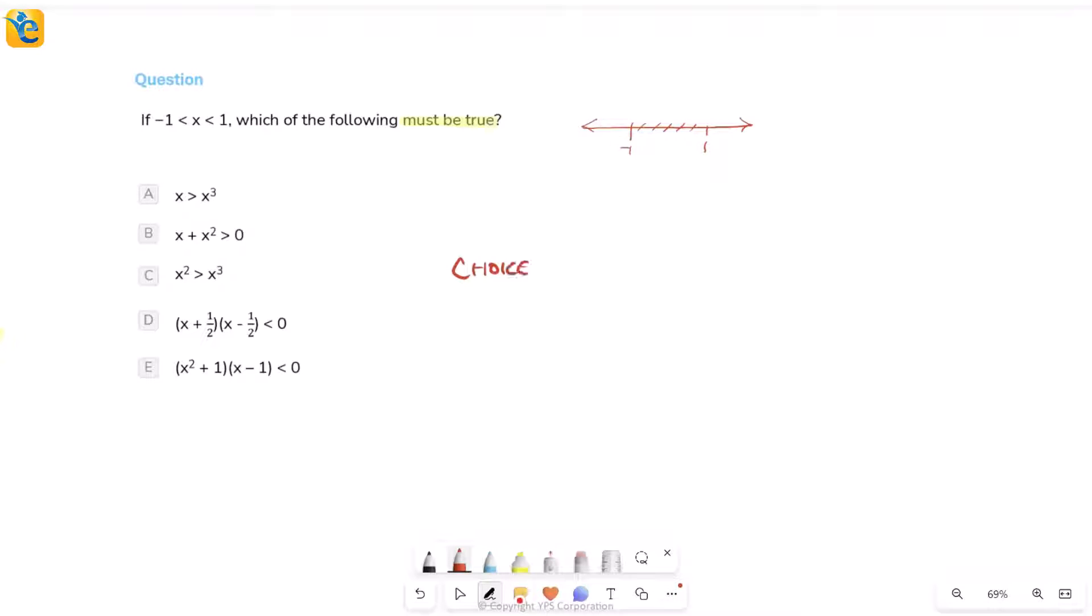So I can reword it this way: you are looking for the choice which is true for all x in this range, for all x between negative 1 and 1. So you will look at each choice one by one, see where that choice is true. And if you find out that that choice is indeed true everywhere between negative 1 and 1, then that choice will be the correct choice. But if you find that your choice is false for any value of x in this range, then that will be eliminated.